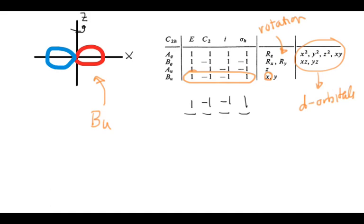Then we have some quadratic functions in the last column, and among other things those could mean the d orbitals. We see patterns like x² and y², which together can give x² minus y². We also see z², xy, xz, and yz. So if we were to draw a picture of say the dz² orbital, we would see that it would have symmetry with respect to all these operations and could be described by Ag.